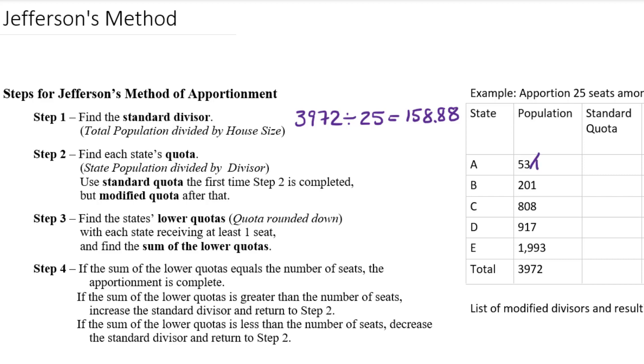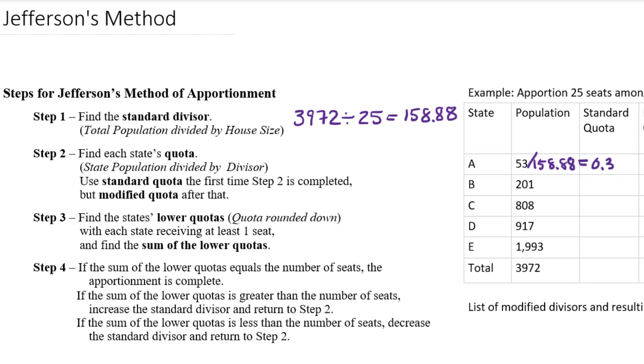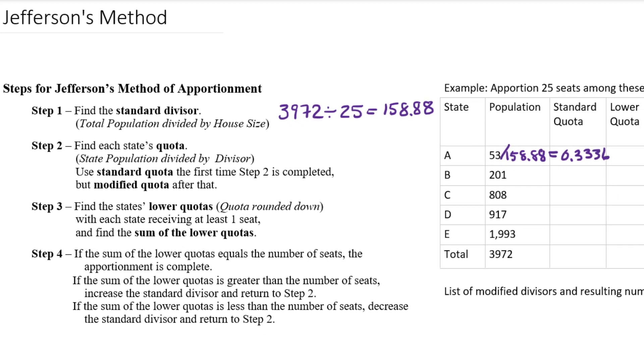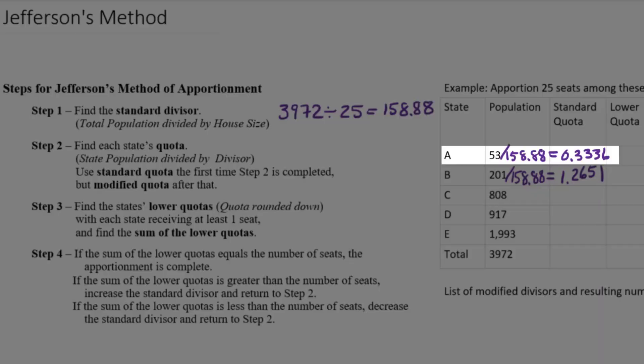For example, 53 divided by 158.88 is going to give you 0.3336 approximately. 201 divided by 158.88 is going to give you 1.2651. So what this is telling us is that State A deserves a third of a representative approximately.